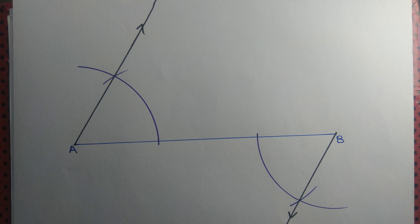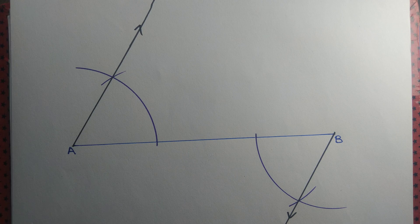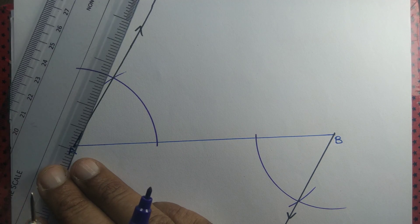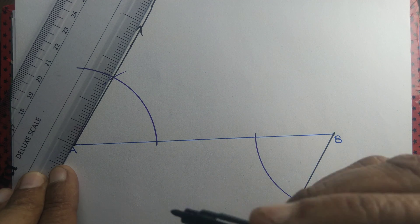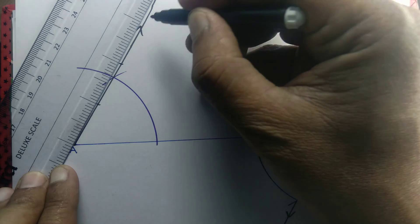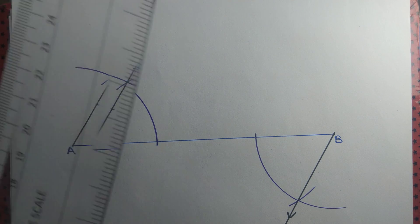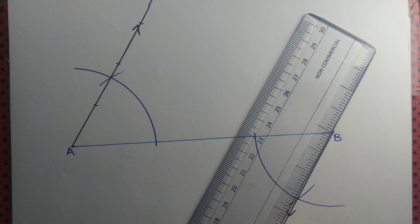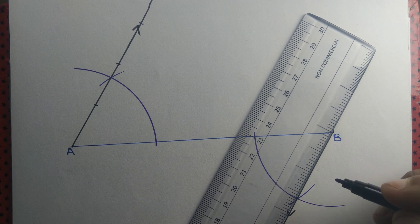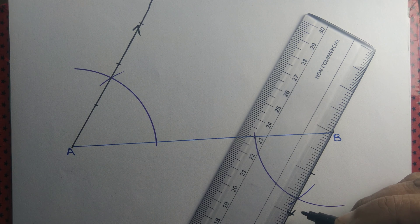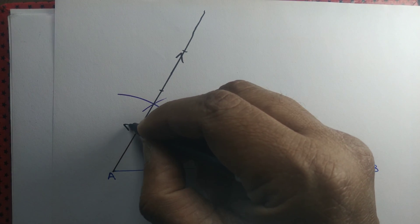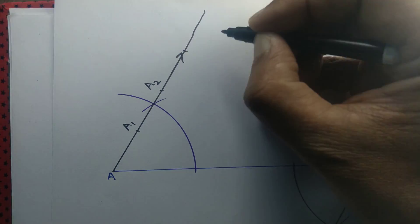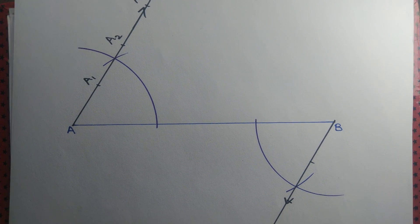Next step is to take three points at an equal interval from point A as well as B. We want three points at an equal interval from point A. One point, two points, three points. Maintaining the same interval — we choose one inch — we mark the points. We have taken three points from A, each having a gap of one inch: A1, A2, A3. They are one inch apart from each other.